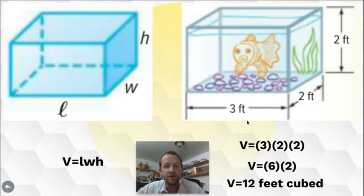The length is three feet. So, I'm replacing L with three. I'm going to replace W with the width, which is two feet. I'm going to replace H with the height, which is two feet. So, in order to find the volume of this fish tank, the volume equals three times two times two.